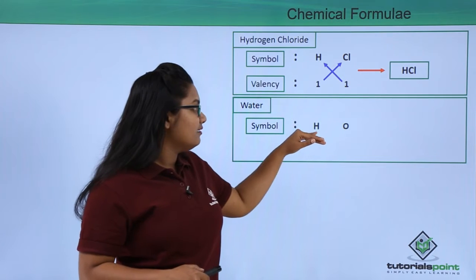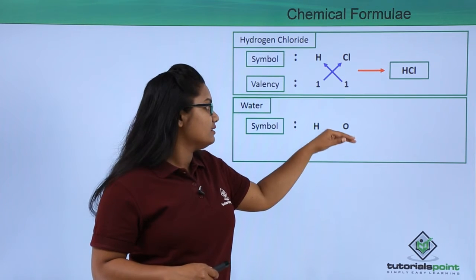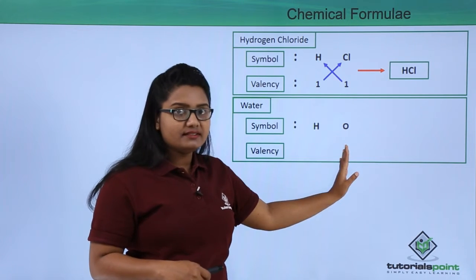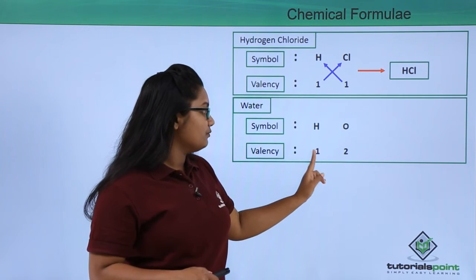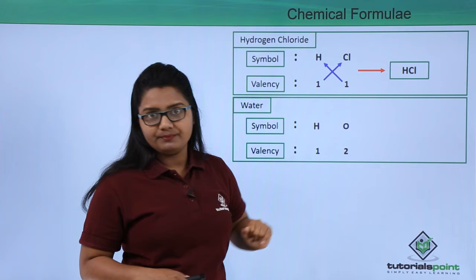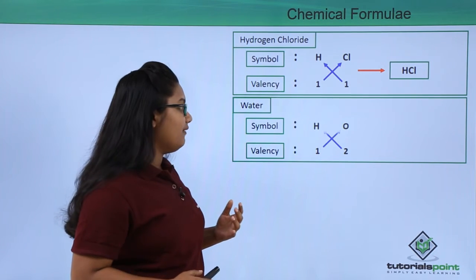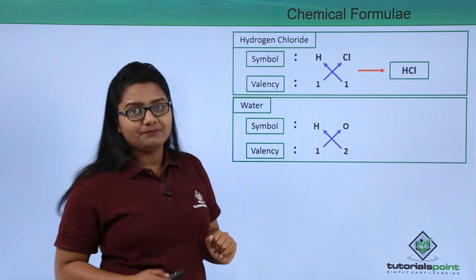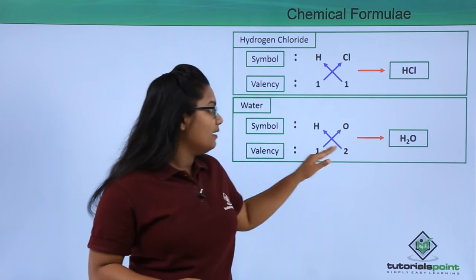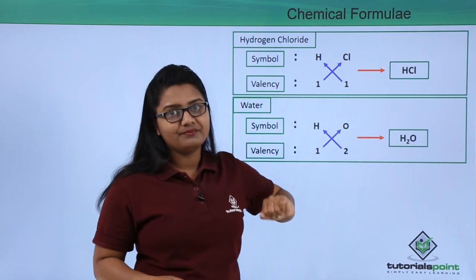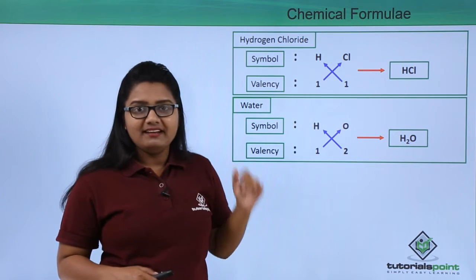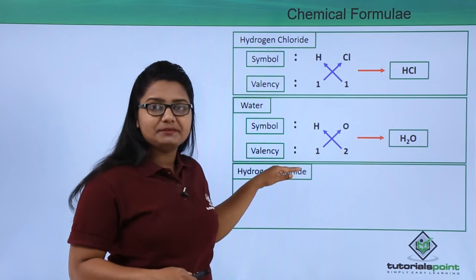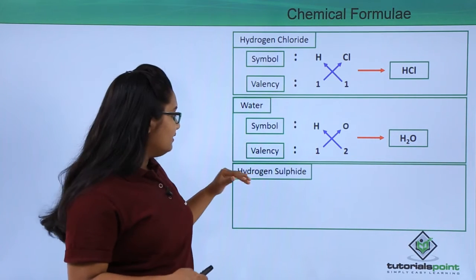For water, we know it contains hydrogen and oxygen atoms. We write the symbols H and O, with valencies 1 for hydrogen and 2 for oxygen. Crossing over: 2 goes to H and 1 goes to O, giving the formula H₂O.